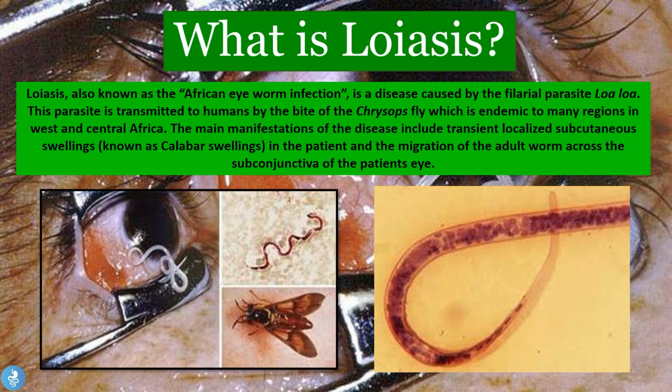So what is loasis? Loasis, which is also commonly known as the African eye worm infection, is a disease caused by a filarial parasite called loa loa. The parasite is transmitted to humans by the bite of the Chrysops fly, which is endemic to many regions in West and Central Africa. The main manifestations include transient localized subcutaneous swellings known as calabar swellings, and the migration of the adult worm across the subconjunctiva of the patient's eye.